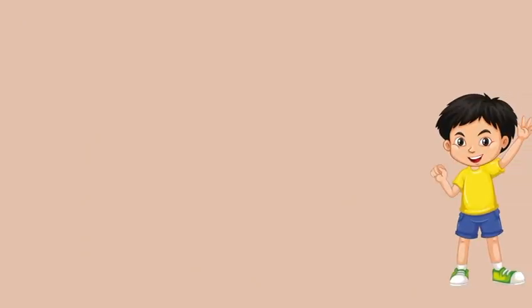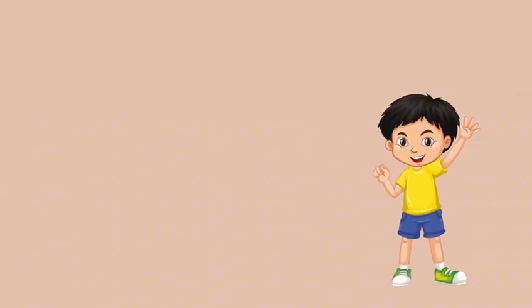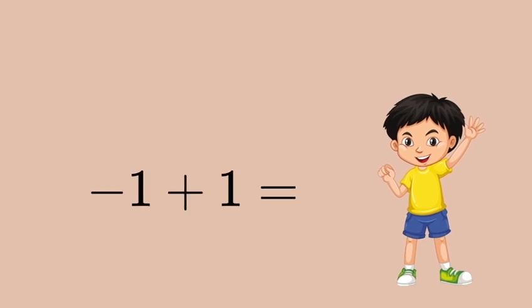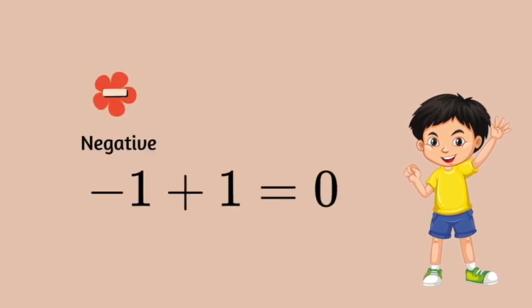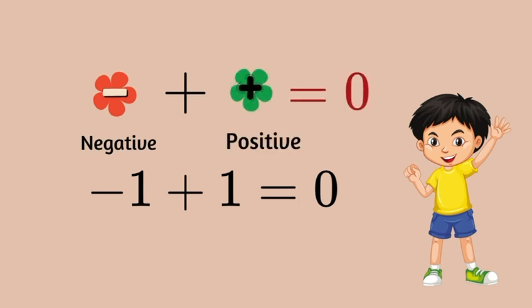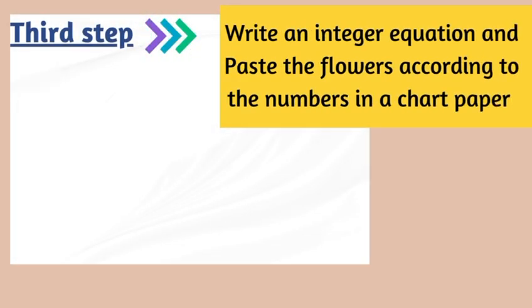Before starting the project, we should know the basic rule of integer addition: negative 1 plus 1 equals 0. We have selected the green flower as positive and the red flower as negative, so one red flower plus one green flower together will make 0. Third step: write any integer equation and paste the flowers according to your numbers on a chart paper.